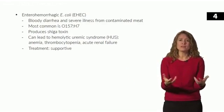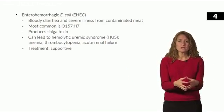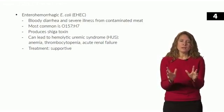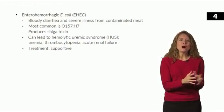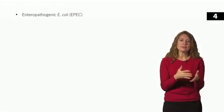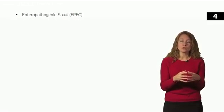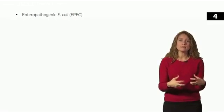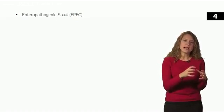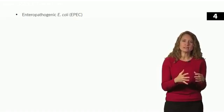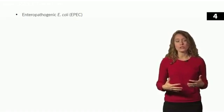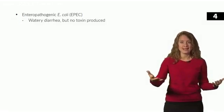Next is enteropathogenic E. coli. This type attaches to the intestinal cell and causes effacement. This attachment and effacement results in abnormal electrolyte and water secretion, leading to diarrhea. There's no toxin production to blame the diarrhea on.